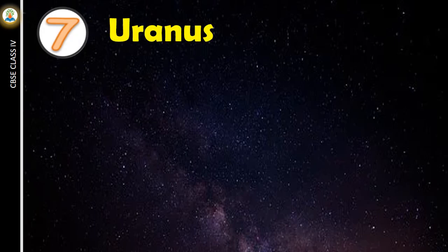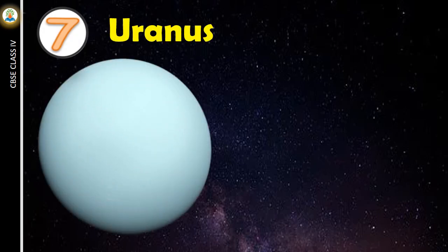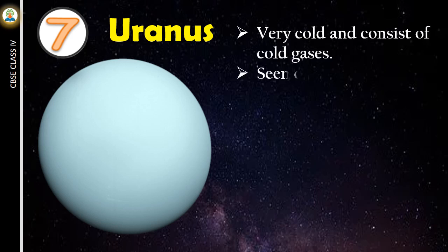Uranus is the seventh planet. It is very cold and consists of cold gases. Can be seen only through a very powerful telescope.